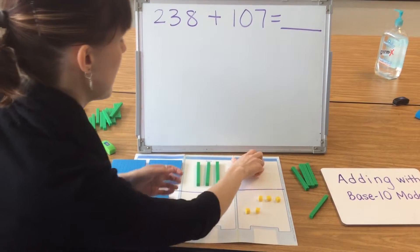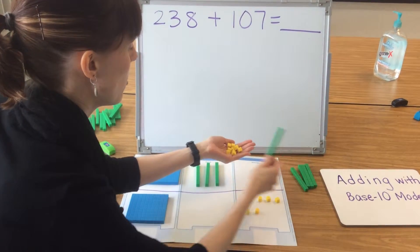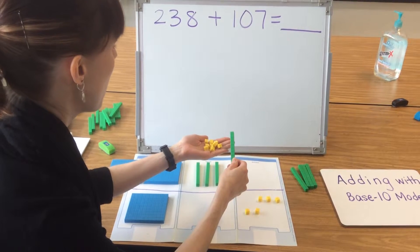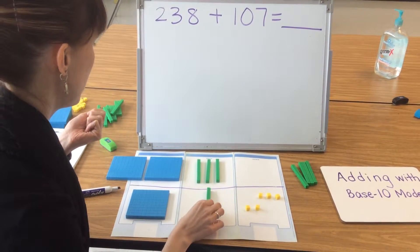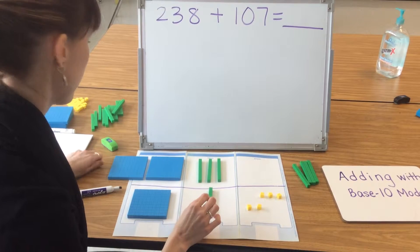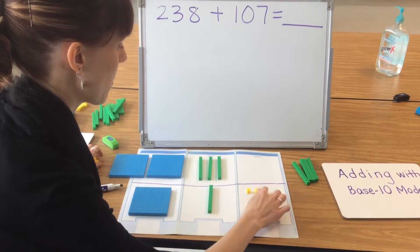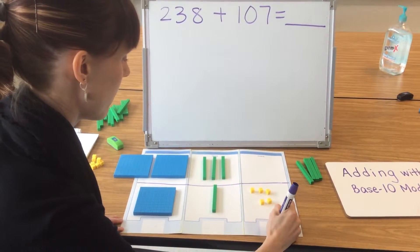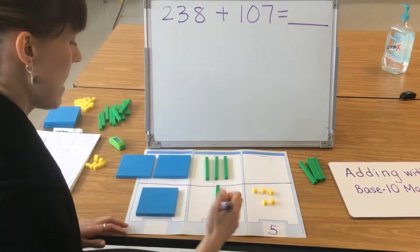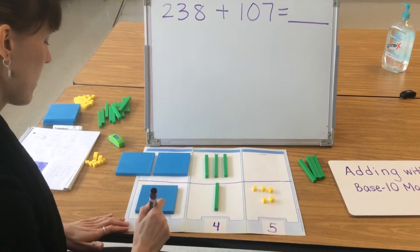I'm going to trade these 10 ones for a new 10 because they are the same — they have the same value. And I move that new 10 into the tens place. I then count the remaining ones: 1, 2, 3, 4, 5. Count my tens: 1, 2, 3, 4 tens. And I have to count my hundreds: 1, 2, 3 hundreds.